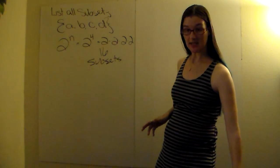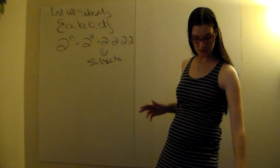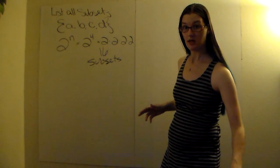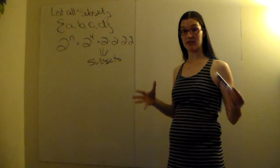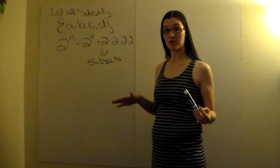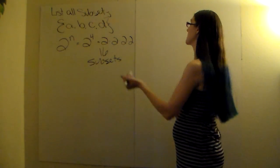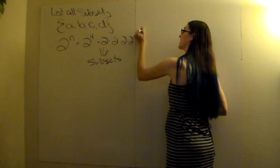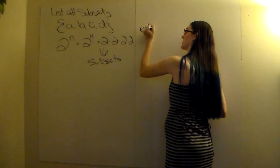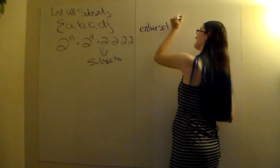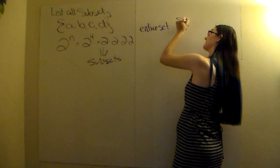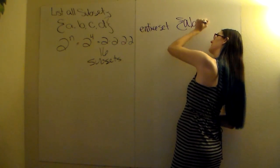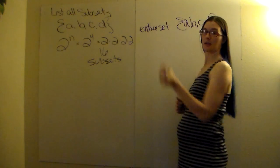So when you're listing subsets, the first thing you should do is start with the original set. Because subsets include the whole entire set. If it was proper, you would not. But for a regular subset, you're going to write down the entire set.